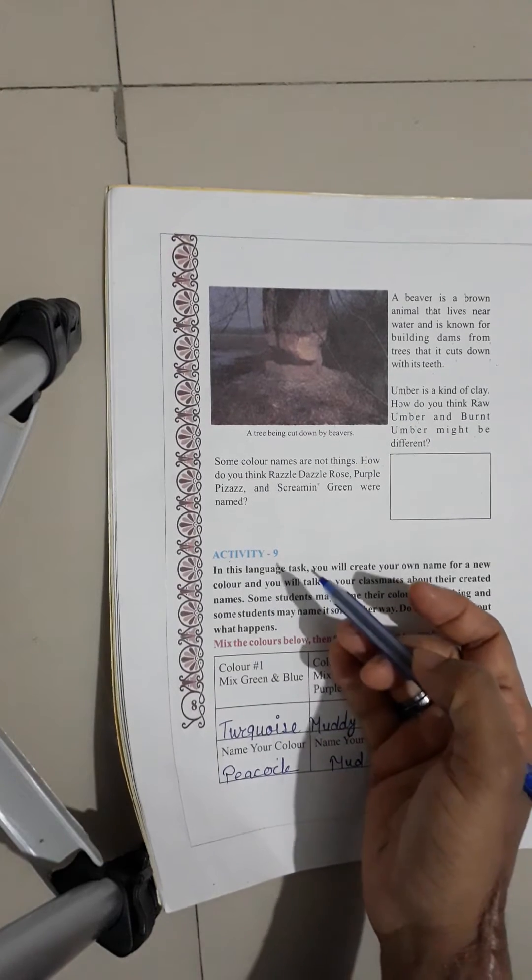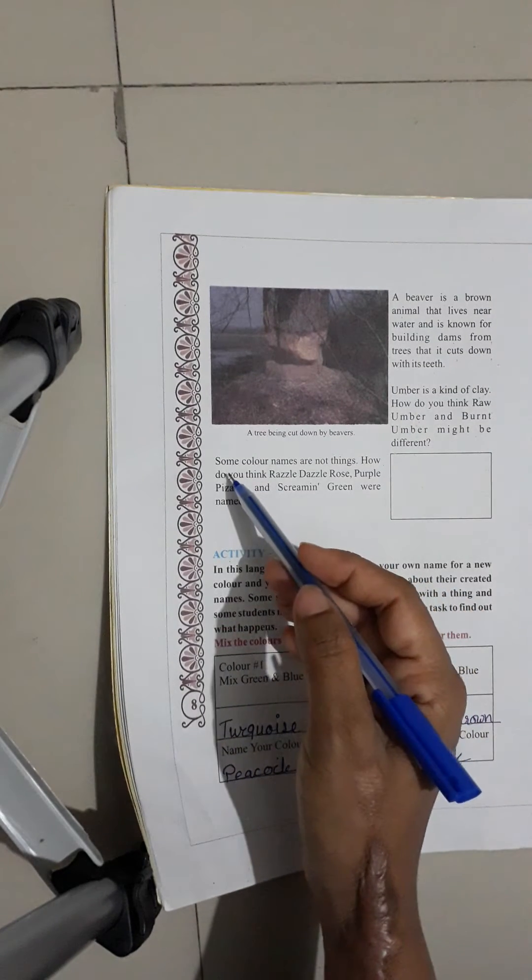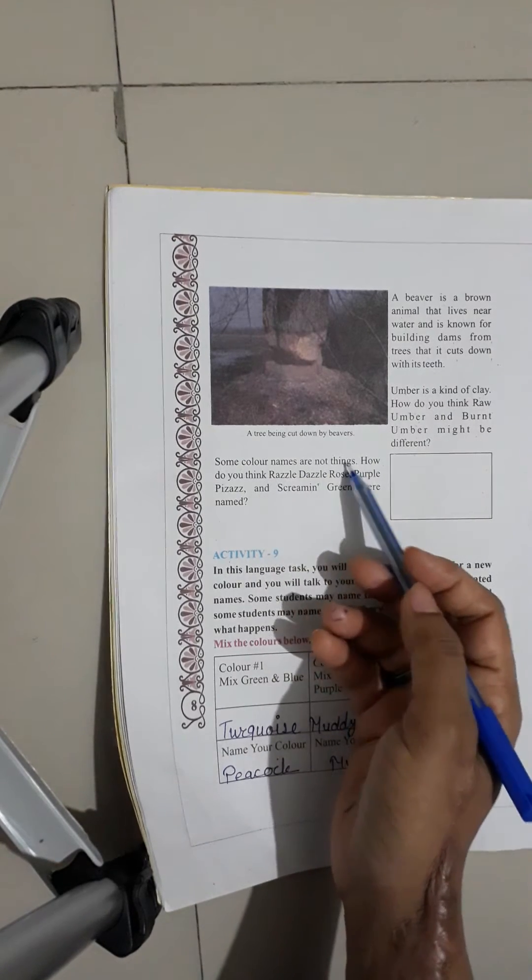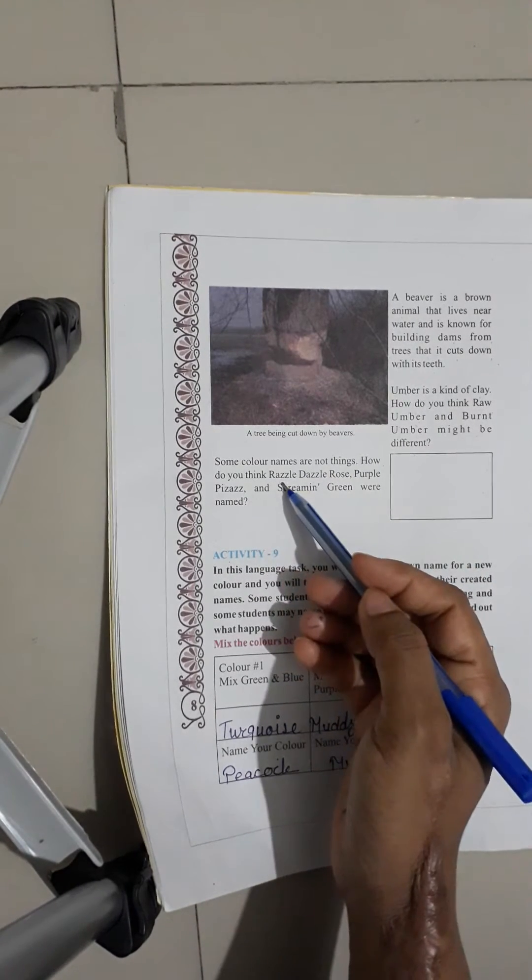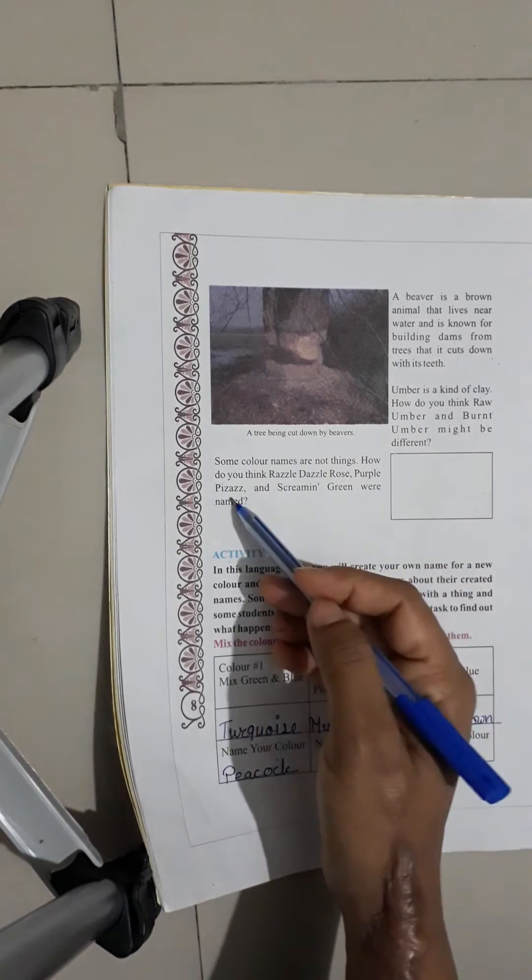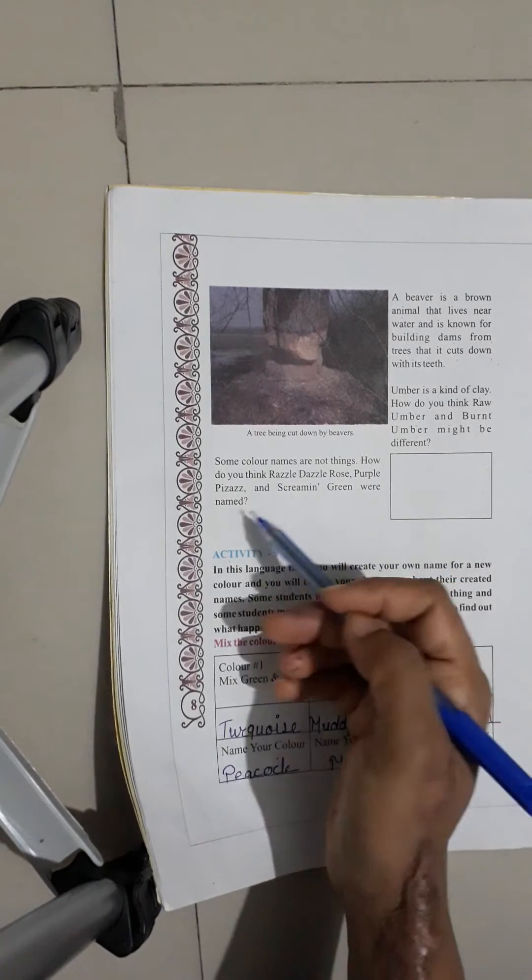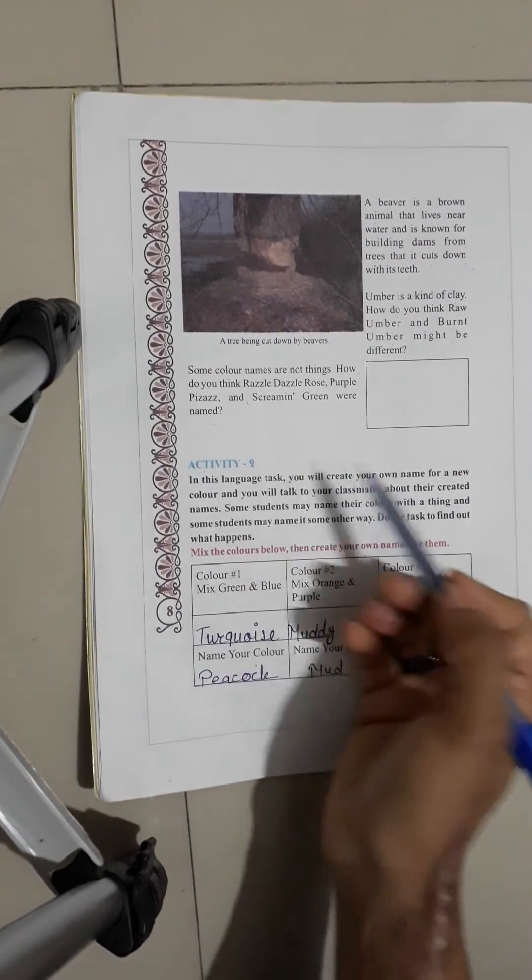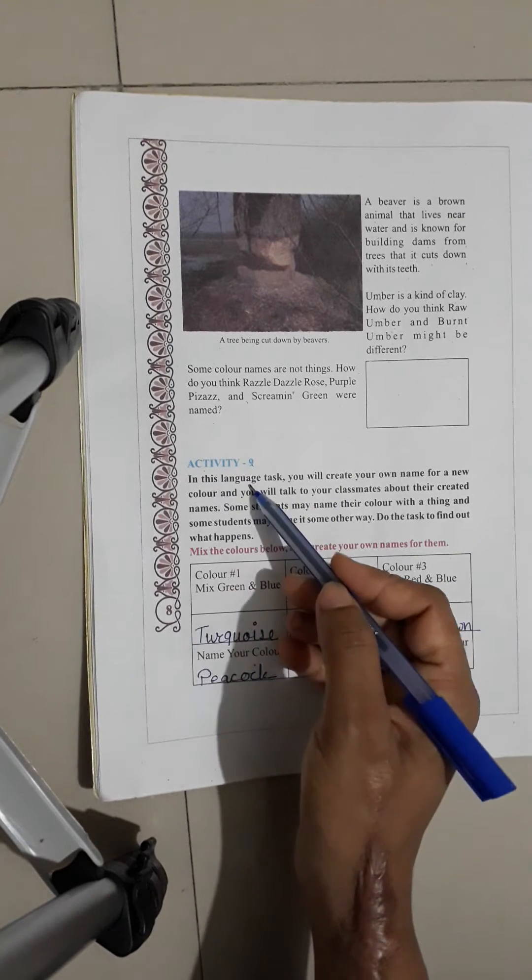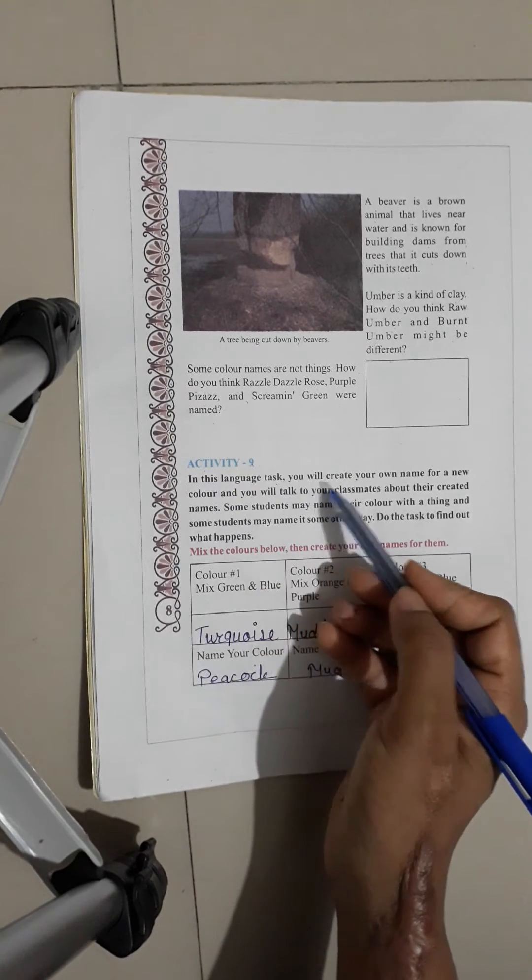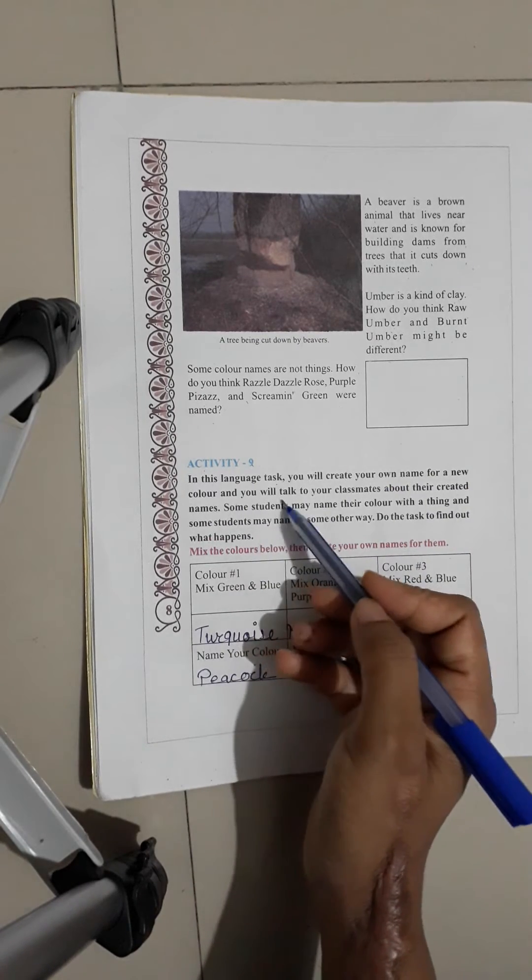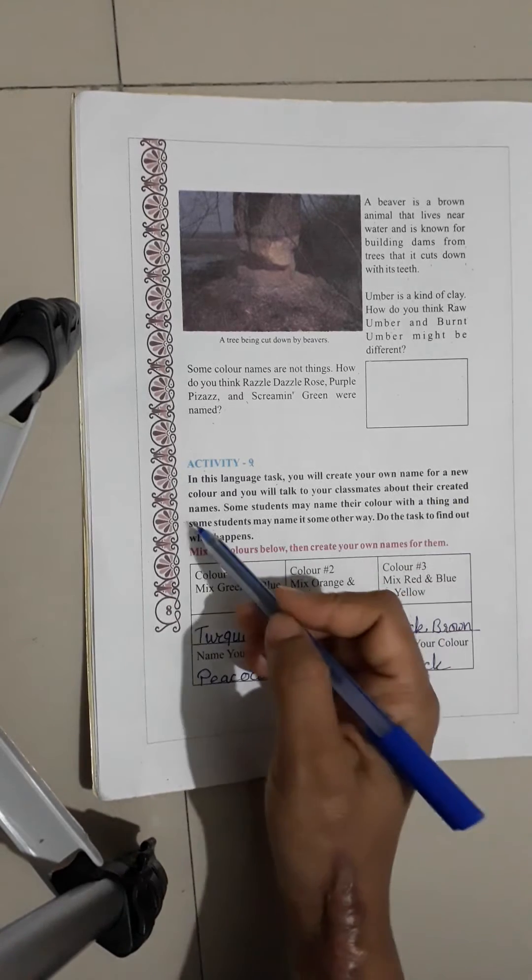You have to experiment with some color. Some color names are not things. How do you think razzle dazzle rose, purple pizzazz, and screaming green were named? Now, activity name. In this language task, you will create your own name for a few new colors and you will talk to your classmates about their created names.